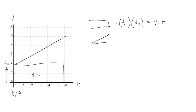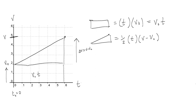The triangle section is one-half base times height. The base is one-half T. The height is not v-naught but the difference between the final velocity V and v-naught — we call that delta V, which is always V minus v-naught. So the area of the triangle is one-half times (V minus v-naught) times T.